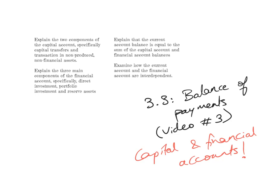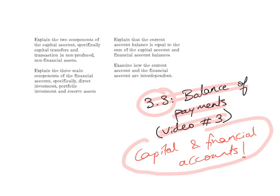This is video number three of the balance of payments miniseries, which is unit 3.3 of the IB Economics International Economics syllabus. In this video I'm going to explain the capital and financial accounts and their relationship to the current account.